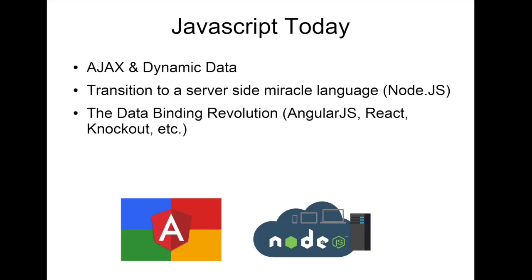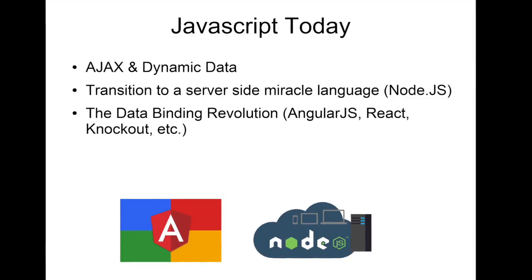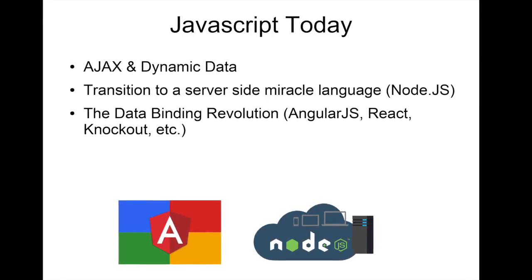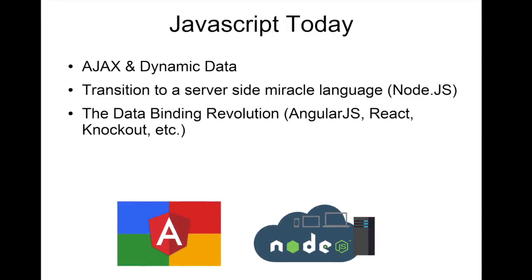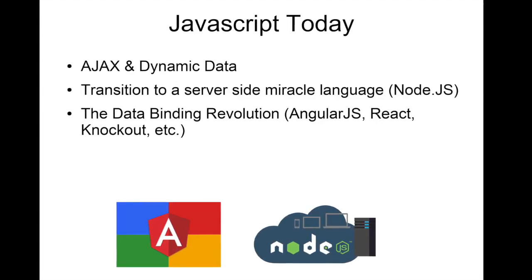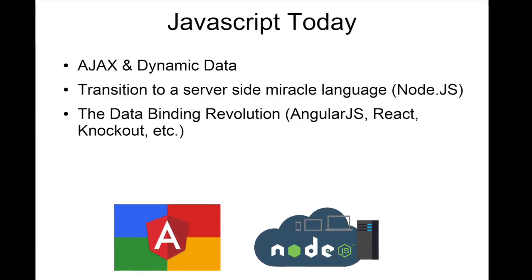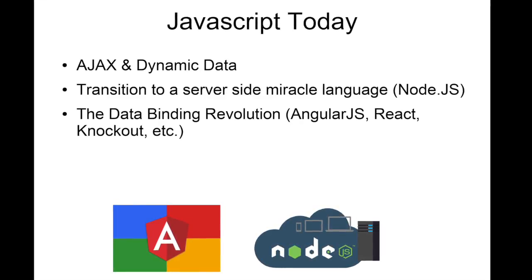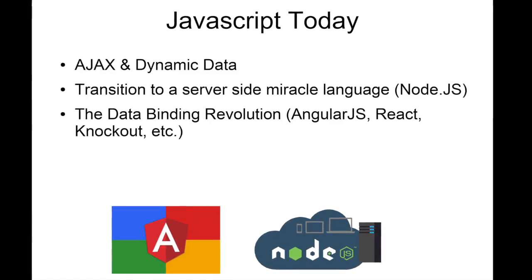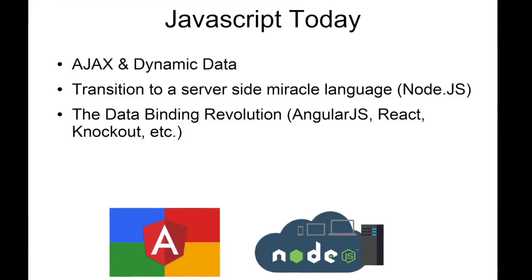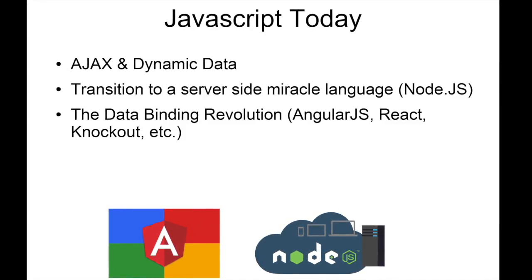Today, JavaScript has evolved to provide immense capabilities in data binding and even server-side development. Node.js and Angular are two of the most popular JavaScript frameworks today. Node.js can be used for developing server-side applications and has its own package manager for open source packages and other software products. Angular.js was developed and maintained by Google and is now one of the fastest-growing web application frameworks available.